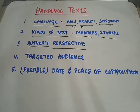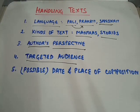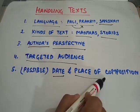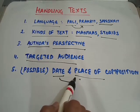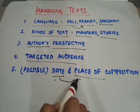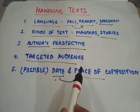To understand the author's perspective, historians look at what time period the text was written in, and what audience it was written for. Historians also study other texts related to this text. Another element considered is the targeted audience — who was the text written for. Lastly, historians try to ascertain when and where the text was composed, though in exact terms this is not always possible.